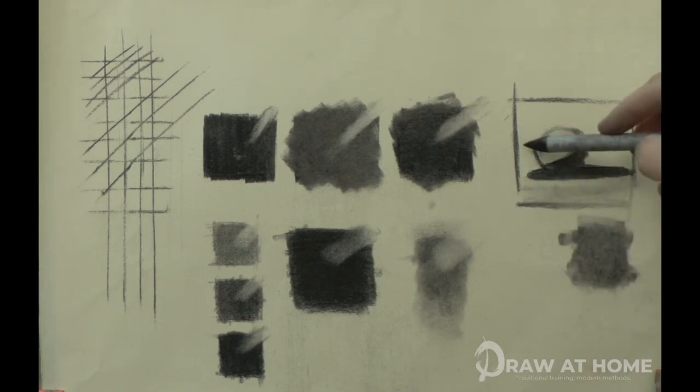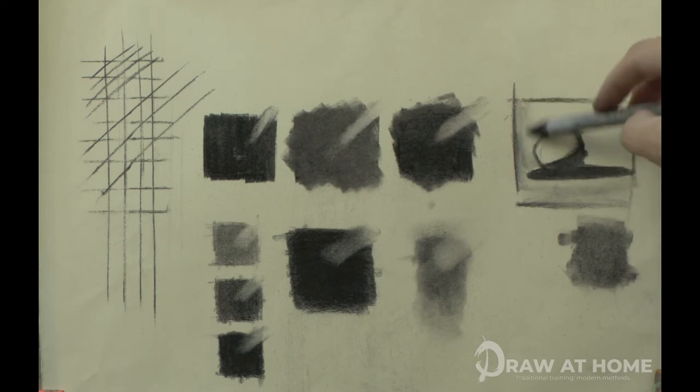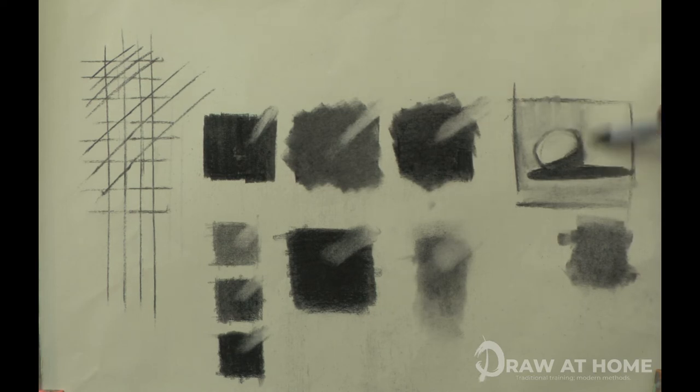So by using this charcoal method, we can create a whole range of values, from 1, being the darkest, all the way up to 9, being the white of the paper.